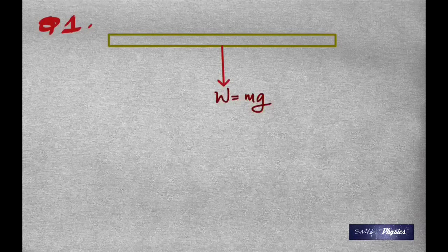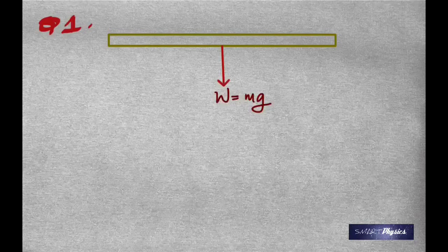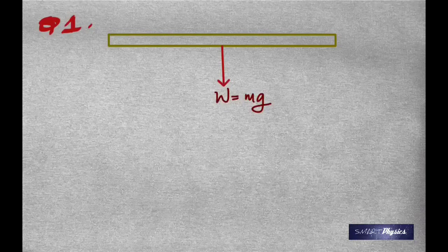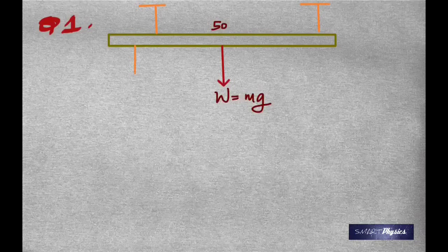To illustrate the concepts, we consider a meter stick. What you see right now is the weight of the meter stick acting vertically down through its center of gravity, which is assumed to be at 50 centimeters. As you know, weight is the product of mass and acceleration due to gravity. We can assume that the mass of this meter stick is 80 grams, acting vertically down through its center of gravity at 50 centimeters.